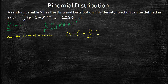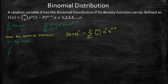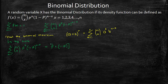Using the binomial theorem, the summation from x equals 0 to n of n choose x times p raised to x times (1 minus p) raised to (n minus x) equals (p plus (1 minus p)) raised to the power of n, which equals 1 raised to the n, and that equals 1.